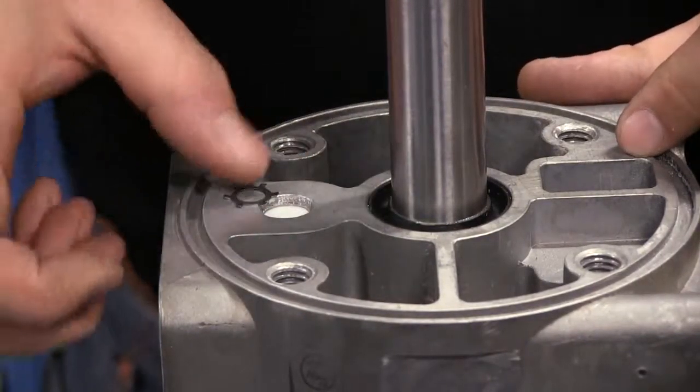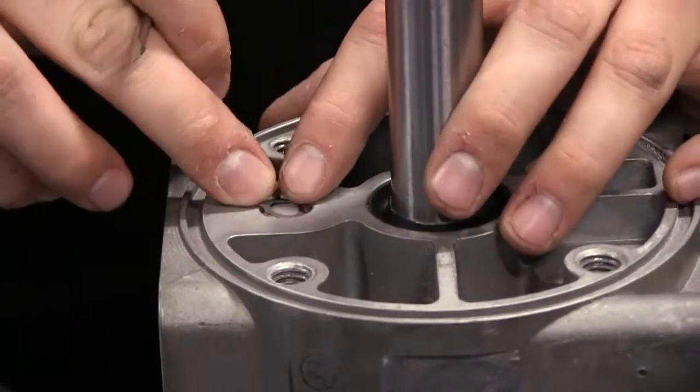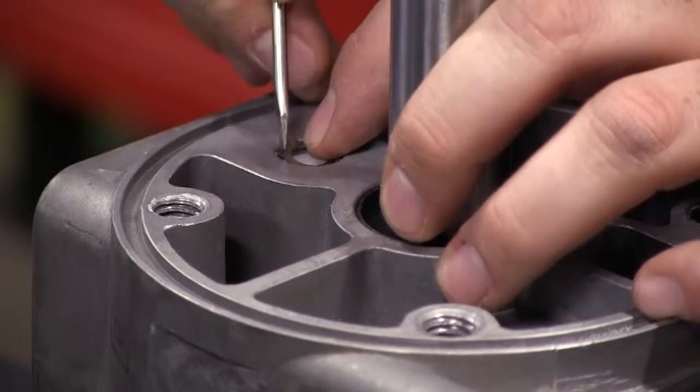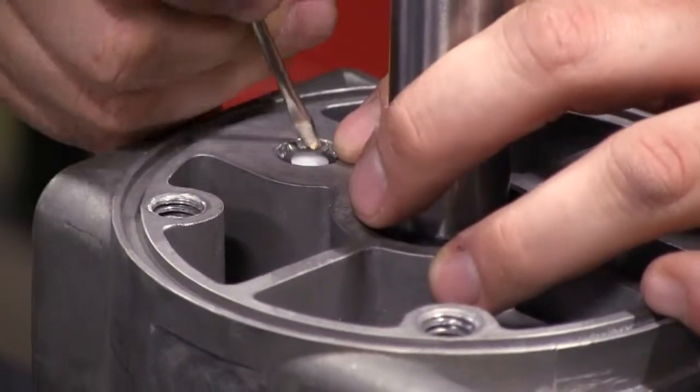Align the retaining ring in the center of the bushing bore and press into the bore until it is flush with the bushing. Ensure that each wing of the retainer is seated below the small lip on the inside of the bushing bore.